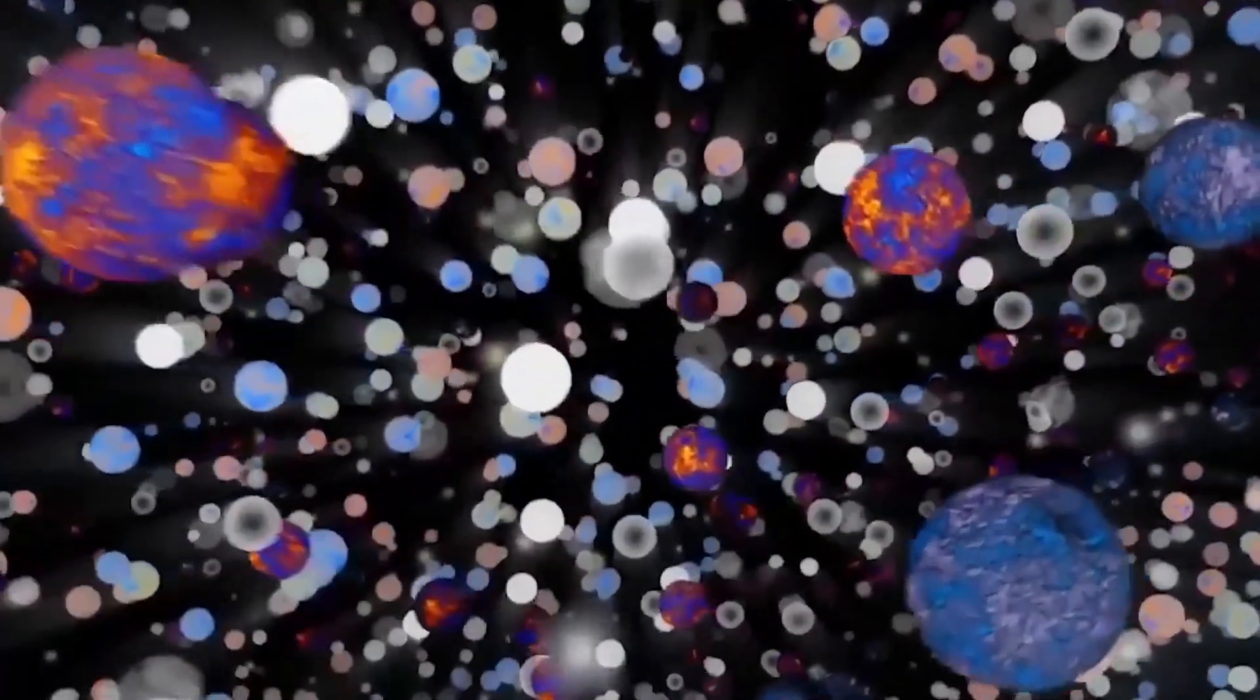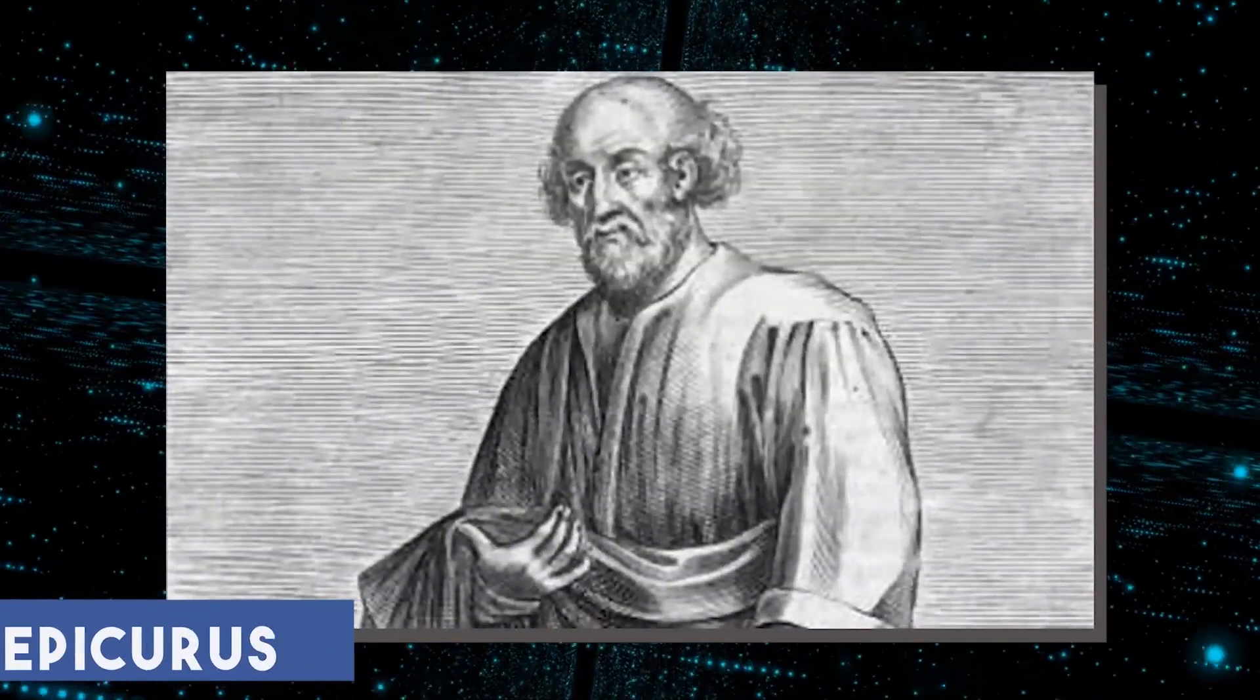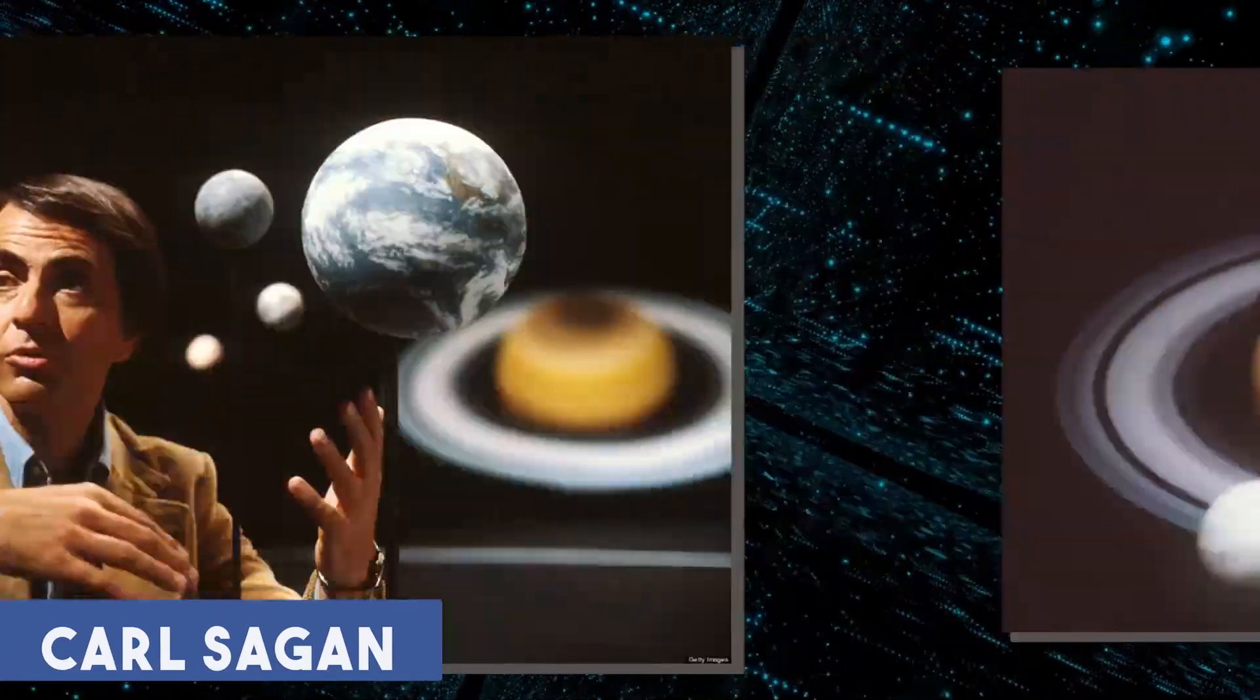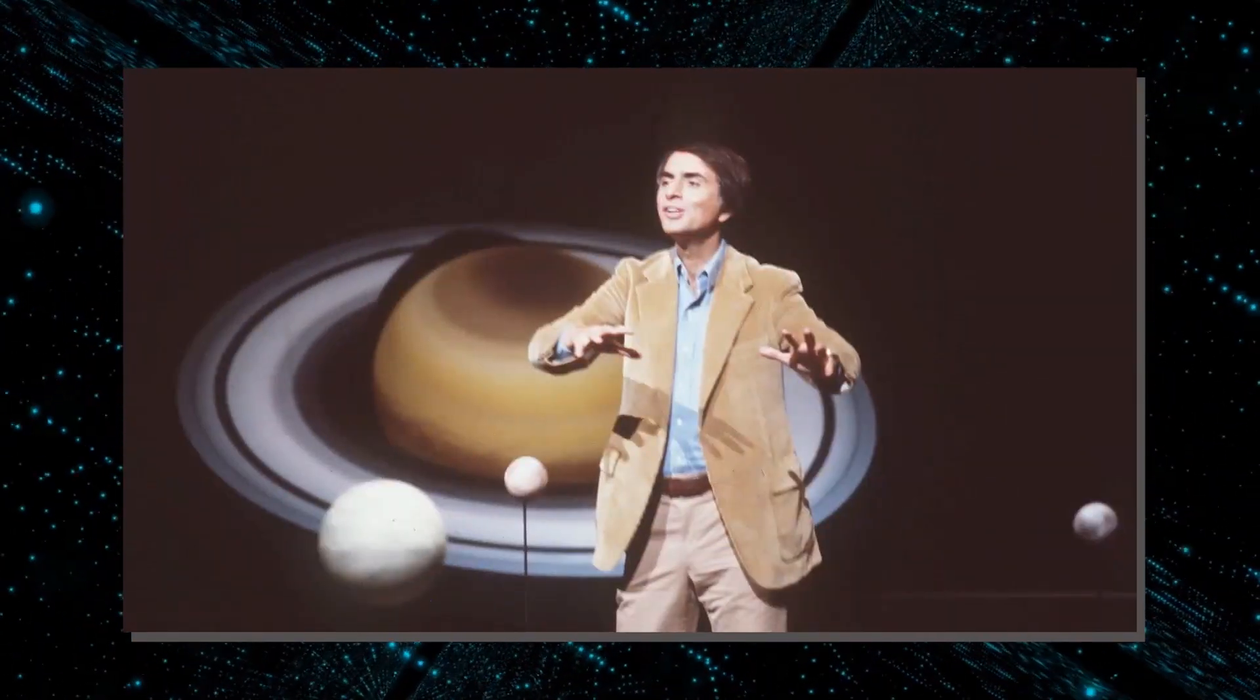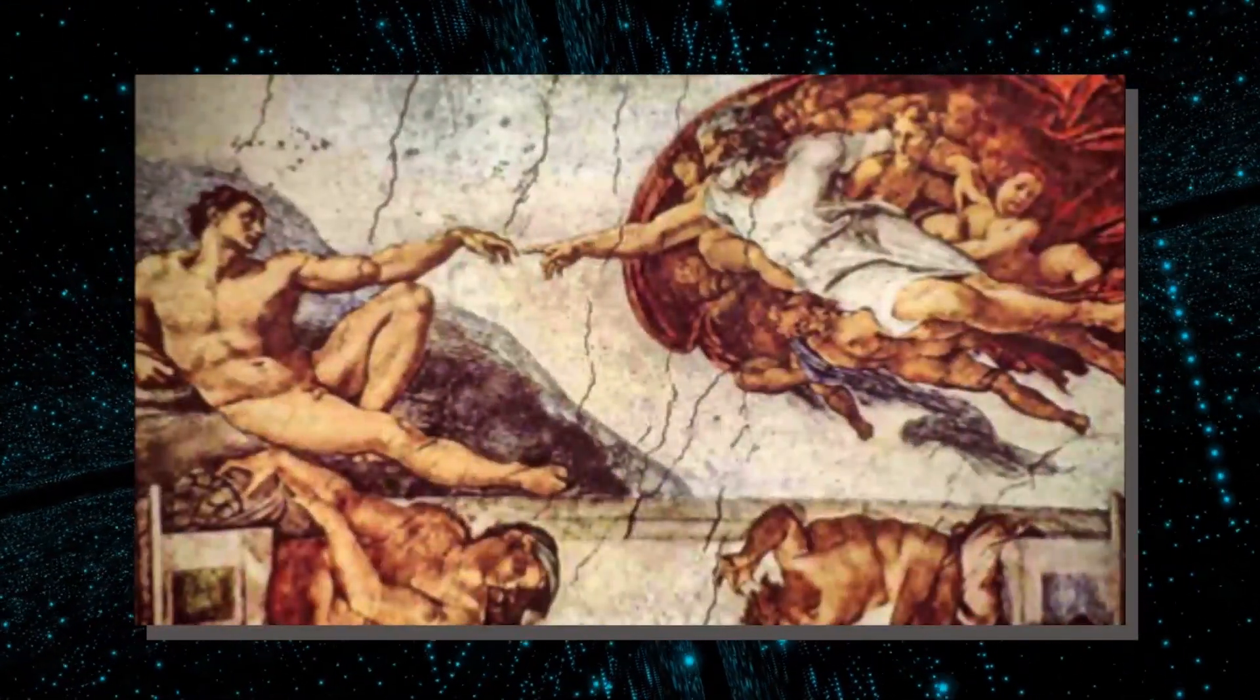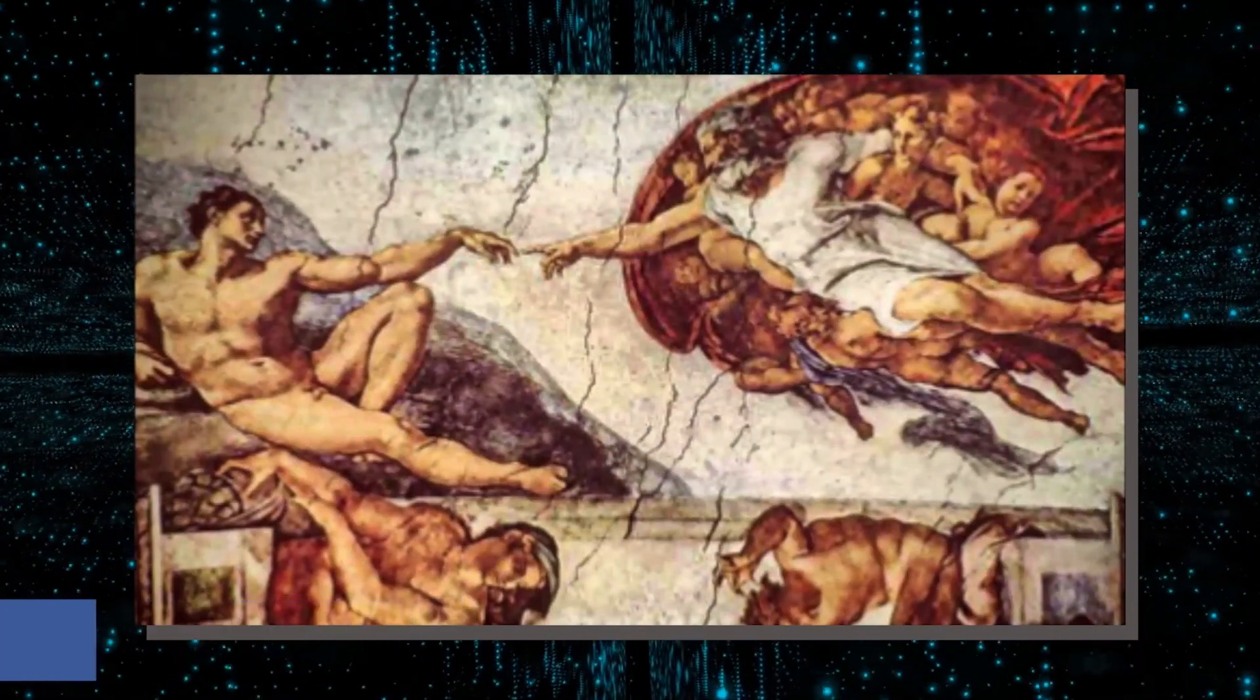The debate over whether there are parallel universes dates back to the 4th century BCE. Epicurus, the ancient Greek philosopher, and Carl Sagan, whose public television series Cosmos introduced astronomical principles to a wide audience, were firmly on opposing sides of the dispute. The debate has raged throughout the Middle Ages and Renaissance, all the way up to the present day.